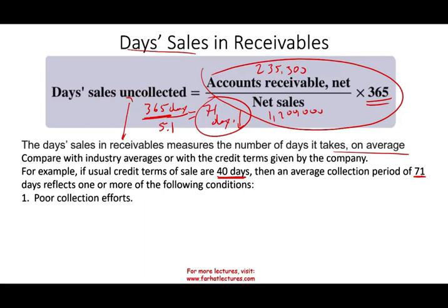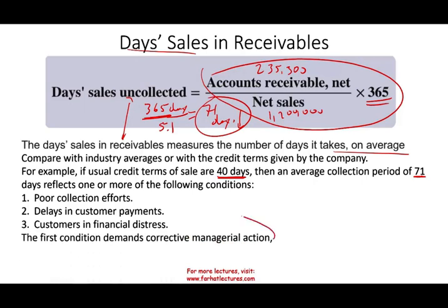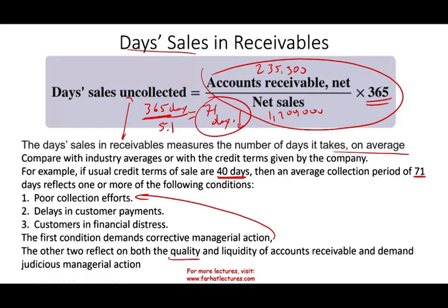Those are three possible reasons. The first — poor collection effort — is something the company can fix. The other two tell you more about the quality and liquidity of the accounts receivable. If the customer is not paying due to financial distress, that's a problem: it means you selected the wrong industry or the wrong customer, and it's harder to deal with.